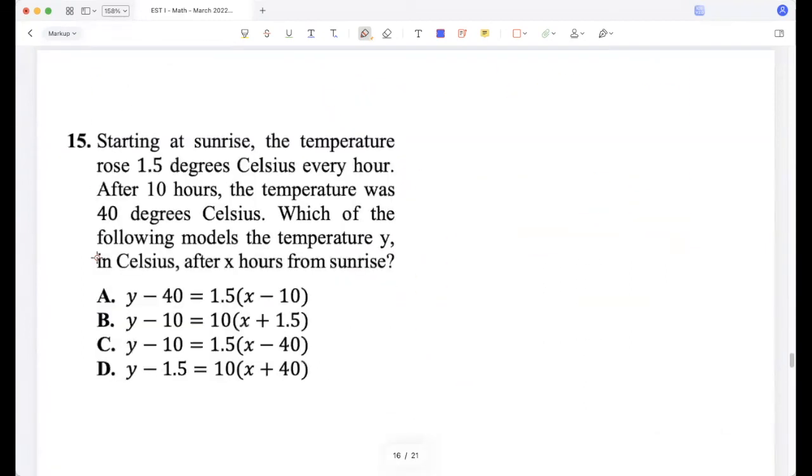Starting at sunrise, the temperature rose 1.5 degrees Celsius every hour. After 10 hours, the temperature was 40 degrees Celsius. Which of the following models the temperature y, x hours after sunrise? Okay, so we can use y - y₁ is m times x - x₁. M is 1.5 degrees Celsius per hour, which is the rise in temperature. And x₁ is 10 and y₁ is 40. So y - 40 is 1.5(x - 10). So that's A.